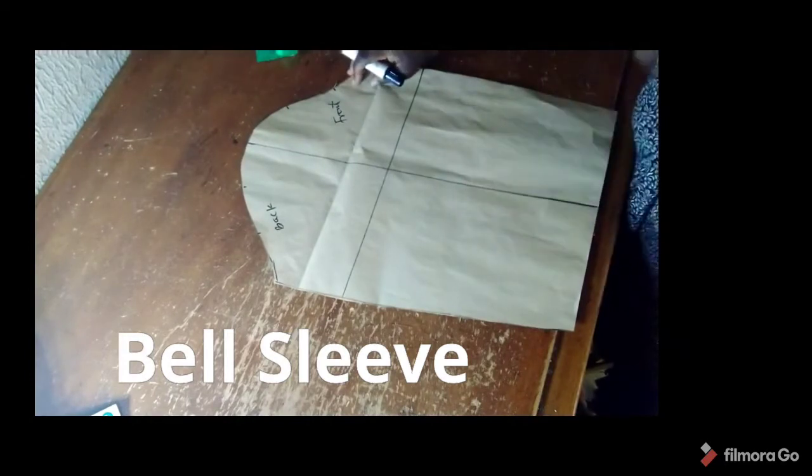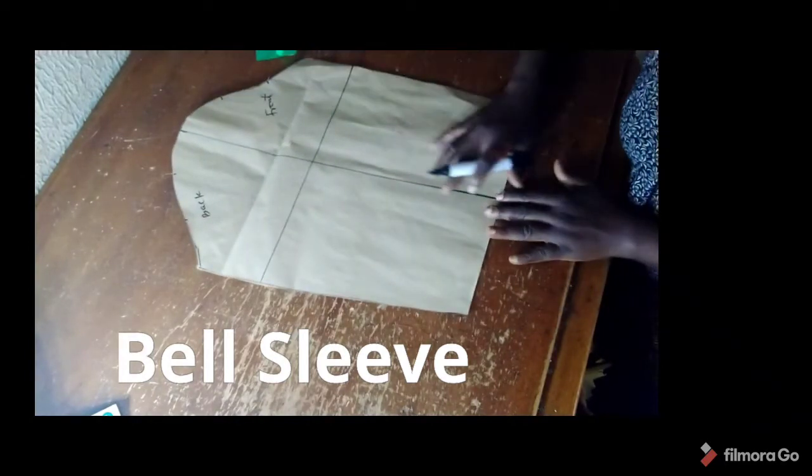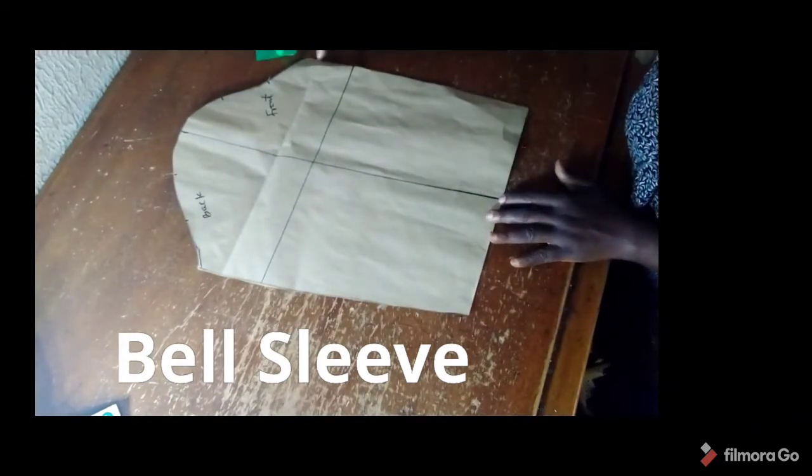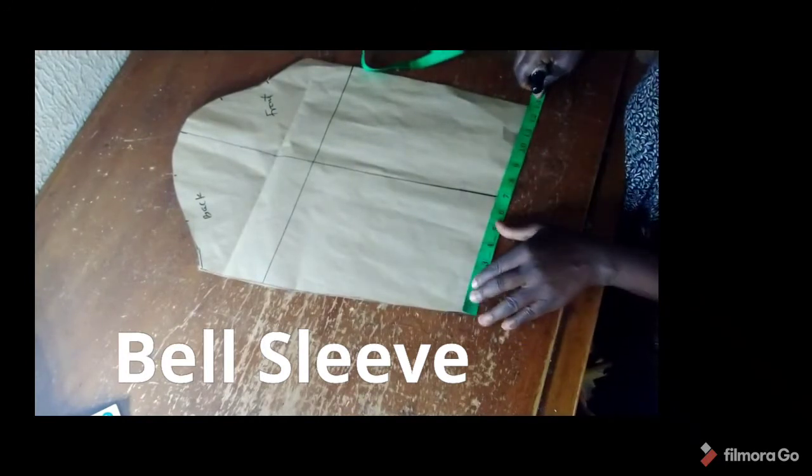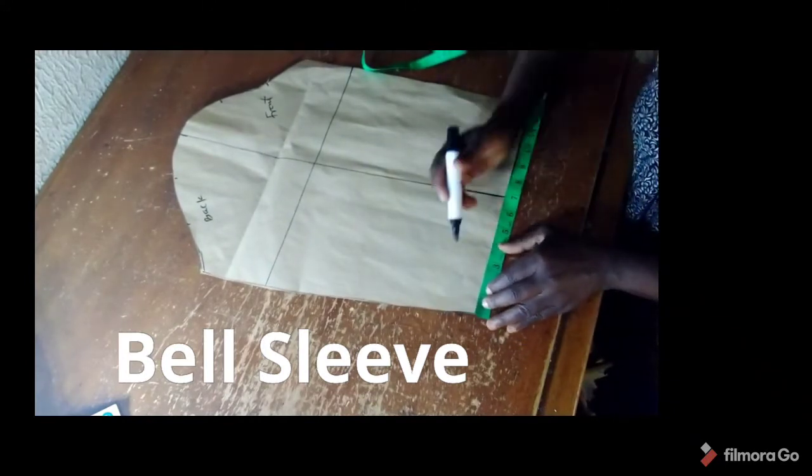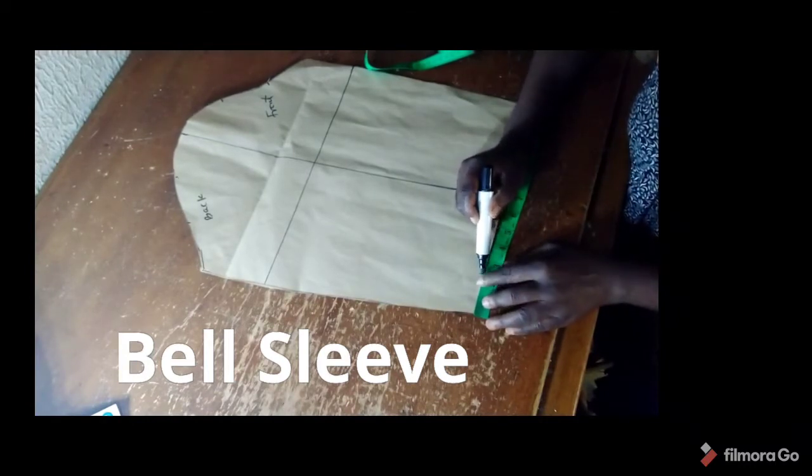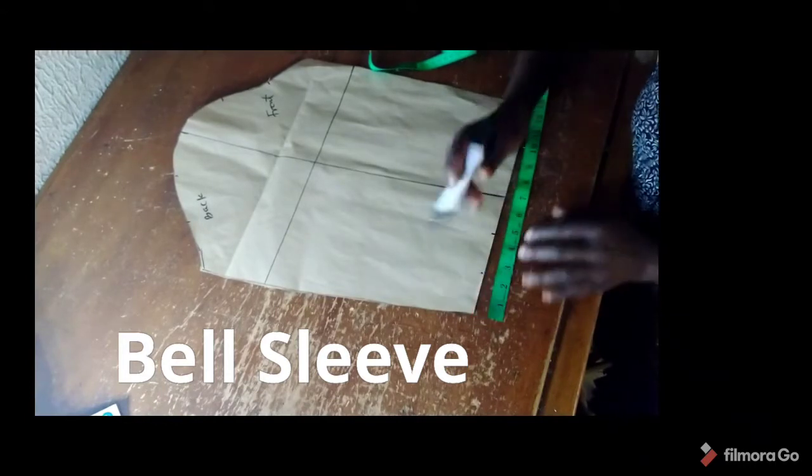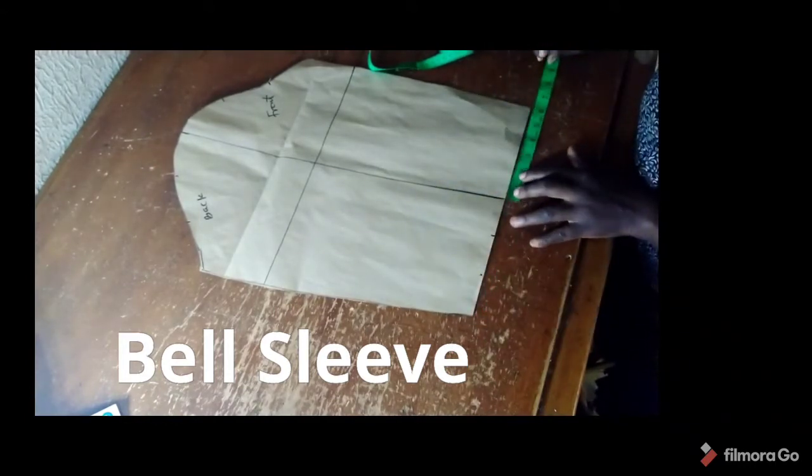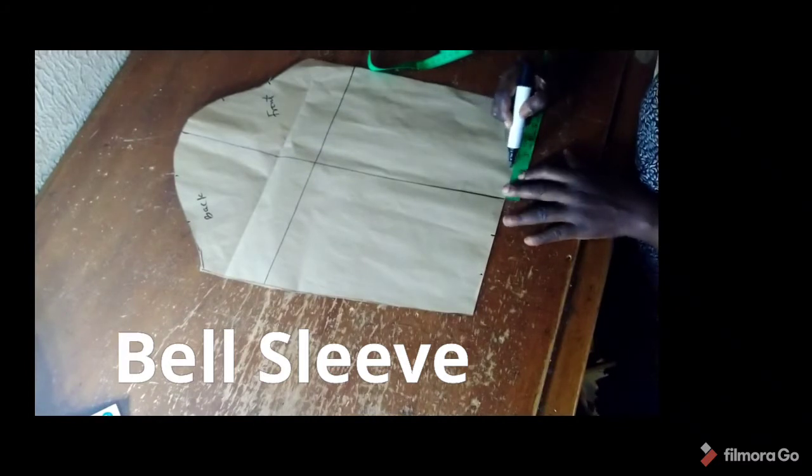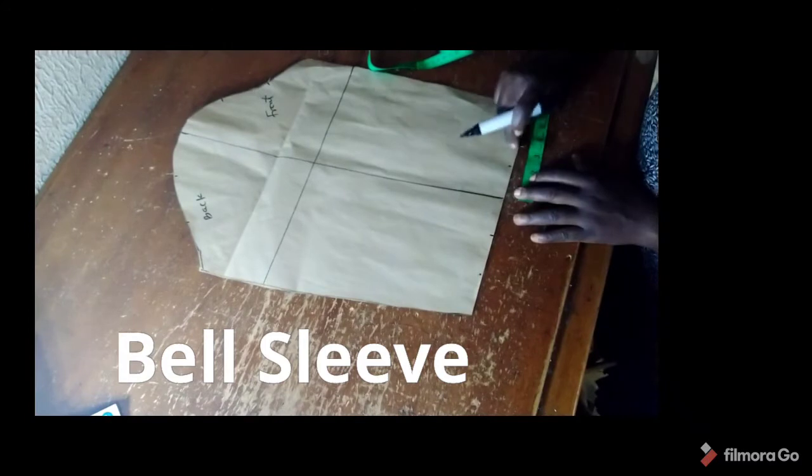At the front, I'm going to divide it into three, so we have one, two, three columns. Then I'll come to the down side of my sleeve. I will likewise divide these into three equal parts. And at the front side of the sleeve, I will also divide it into three.